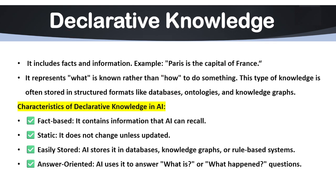Now let's discuss some characteristics of declarative knowledge in AI. Its first characteristic is that it is a fact-based system — it contains information that AI can recall. It is essential for AI because it allows machines to store and recall important facts. That's why we call it fact-based knowledge.